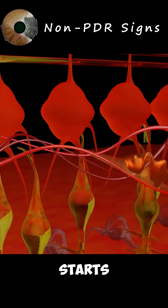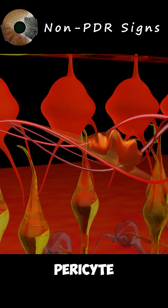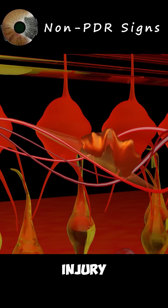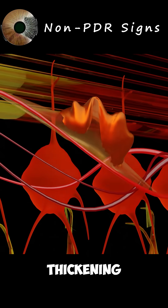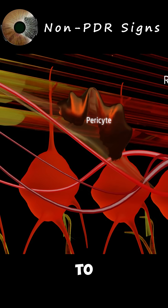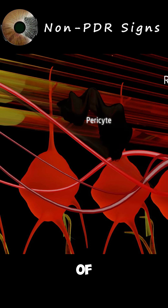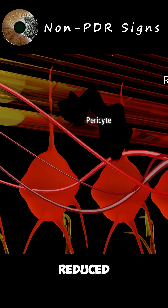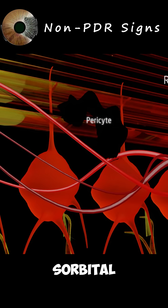Diabetic retinopathy starts with pericyte injury and thickening of capillaries and the basal membrane, due to high levels of glucose reduced to sorbitol.